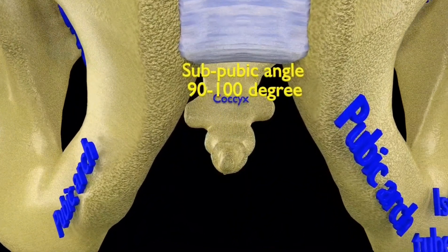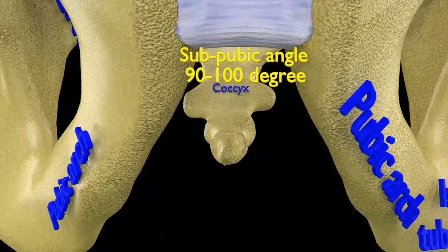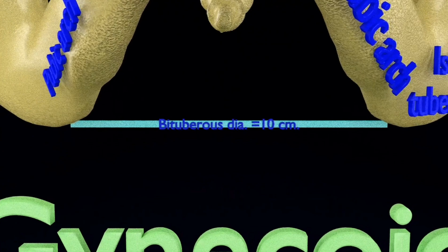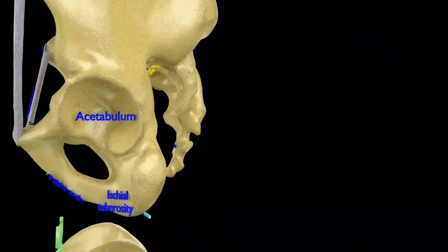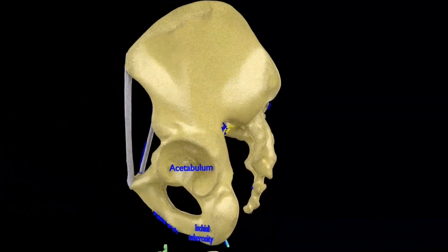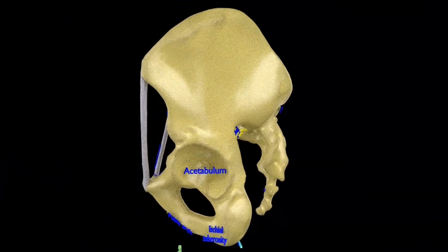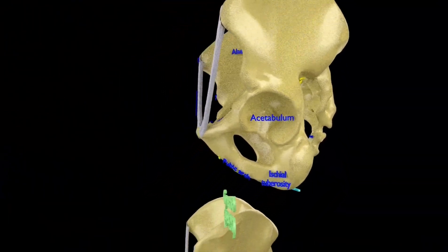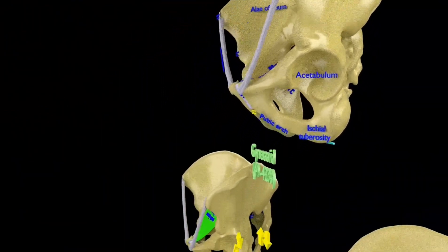All these features make the Gynecoid pelvis the most favorable pelvis type for a vaginal birth. This is because the wide, open shape gives the baby plenty of room during delivery, and the shallow cavity allows a short delivery time.